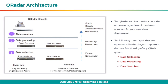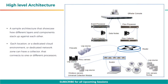The QRadar architecture functions the same way regardless of the size or number of components in a deployment. The following three layers represented in the diagram represent the core functionality of any QRadar system: data collection, data processing, and data searches. On the right you can see a sample architecture that showcases how different layers and components stack up against each other. Each location of your organization, or a dedicated cloud environment, or dedicated network zone can have a collector that connects to one or different processors, which connects to a single console.